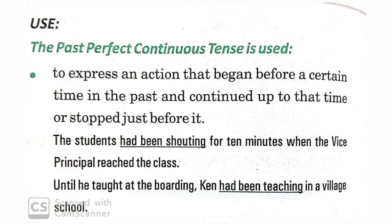So here we have expressed an action that began before a certain time in the past and continued. Another example: Until he taught at the boarding, Ken had been teaching in a village school. This action continued until he taught at the boarding — that's past perfect continuous.